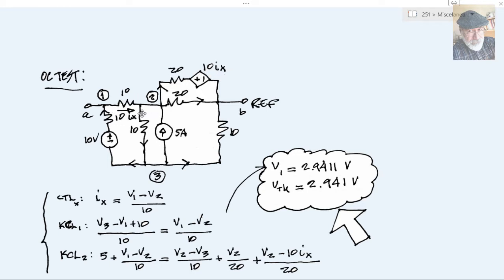One CTL equation for Ix. Ix is the current in this R branch: V1 minus V2 over 10. Down here control equation for Ix. And then we write the three KCL equations for node 1, 2, and 3.